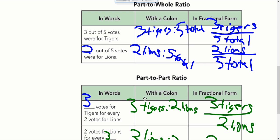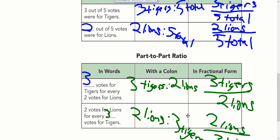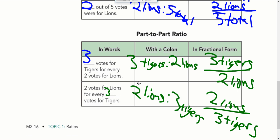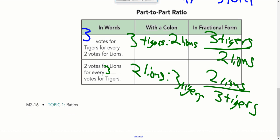Then this is the part-to-part ratio. So we know since there's five total votes, two of them for the lions, three must be for the tigers. So we have three tigers to two lions. And in fraction form, three tigers over two lions. And then we have two votes for lions and three for tigers. All we're doing here is we're just switching the order.